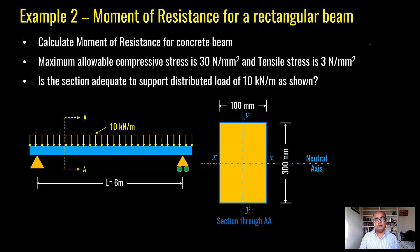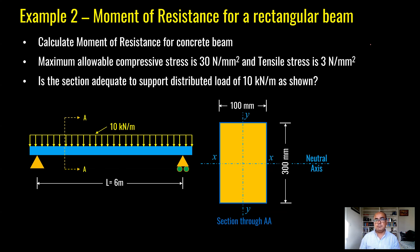Now let's talk about the second example, where we find the moment of resistance for a rectangular concrete beam. The difference here is that concrete is not a homogeneous material like steel. In steel, tensile and compressive stress are the same. In concrete, tensile stress is almost negligible — about 10% of its compressive stress. Here, compressive stress allowable is 30 N/mm² and tensile stress is 3 N/mm².